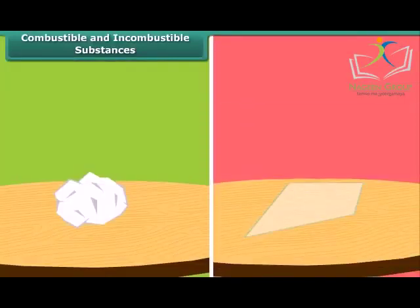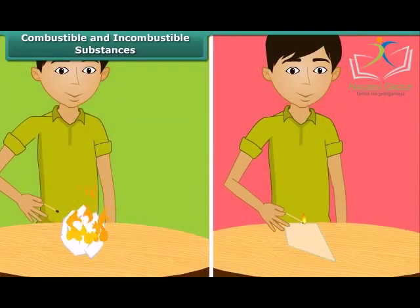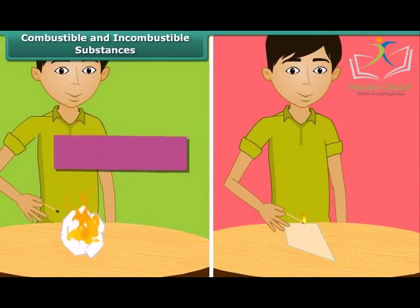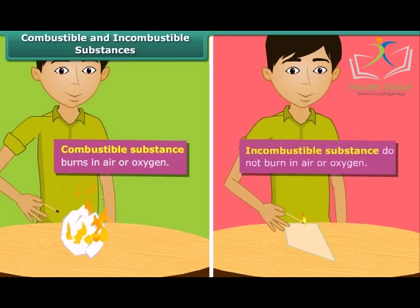There are two types of substances. Some substances catch fire and burn, while others do not catch fire. A boy is bringing a lighted matchstick close to paper and glass. Paper catches fire and so it is called a combustible substance. Glass does not burn — substances which cannot burn in air or oxygen are called incombustible substances.